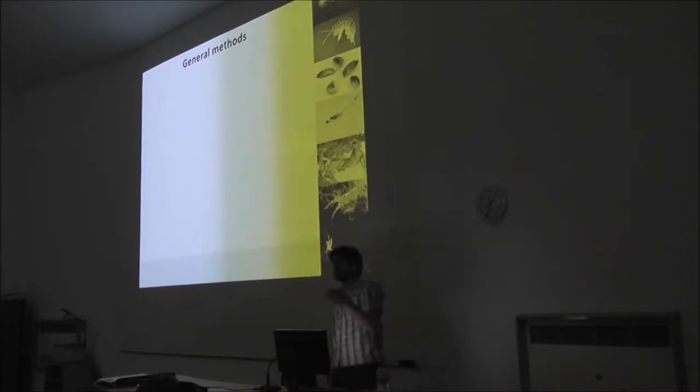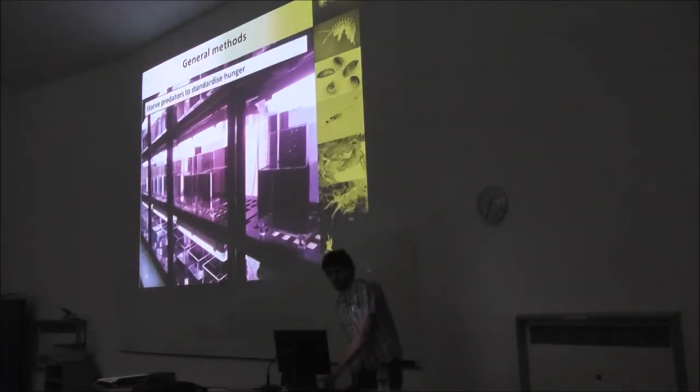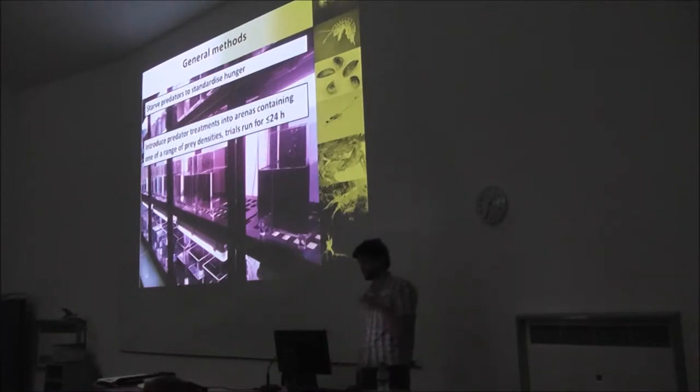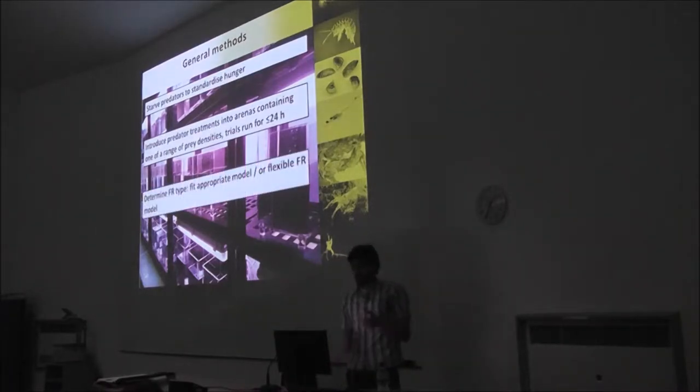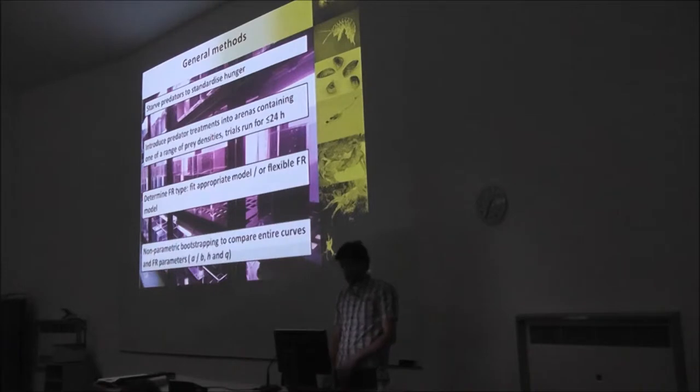General methods, because I've been doing FRs really exclusively for the past three years, so I'm not going to repeat myself four times over. We tend to starve our predators to standardize their hunger. We tend to introduce a single predator into a reno containing one of a range of prey densities, and run our trials for about 24 hours. And we determine the functional response type and we can fit a flexible model alternatively that can handle all of those shapes. And then we can bootstrap the data to get 95% confidence intervals of entire FR curves and their associated parameters.